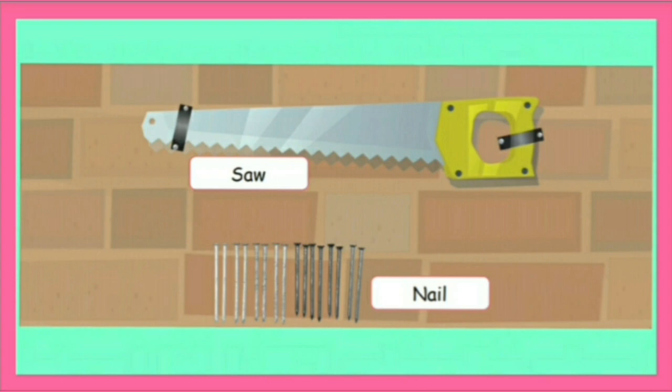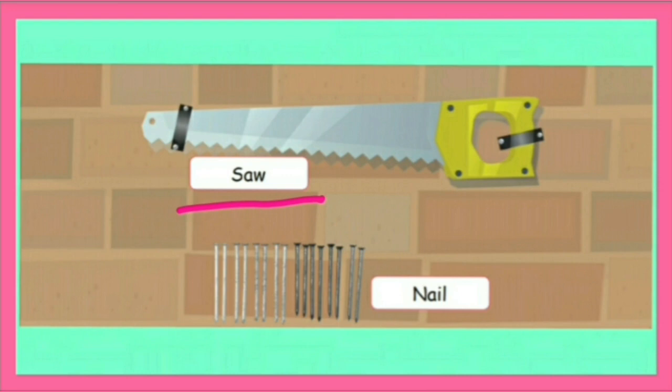Saw. S-A-W. Saw is a tool that is used for cutting wood, etc. A saw has a long flat metal part, i.e. a blade with sharp teeth on it and a handle at one or both ends.